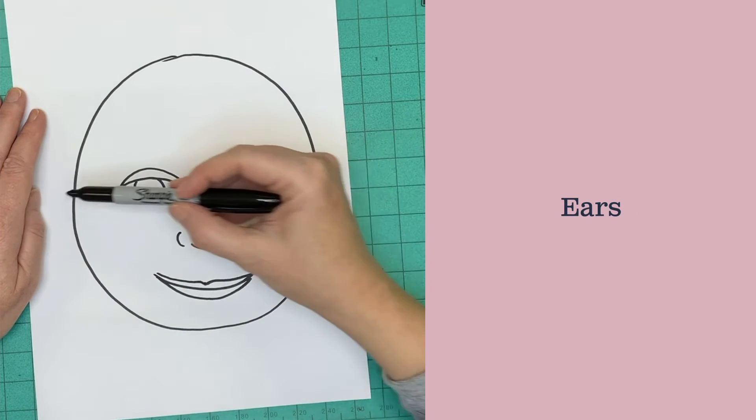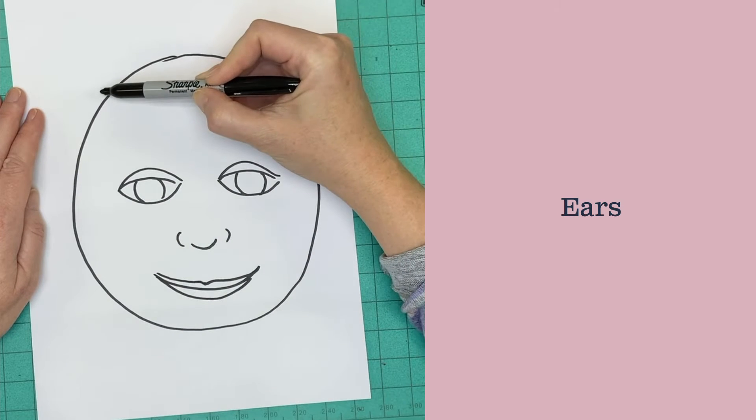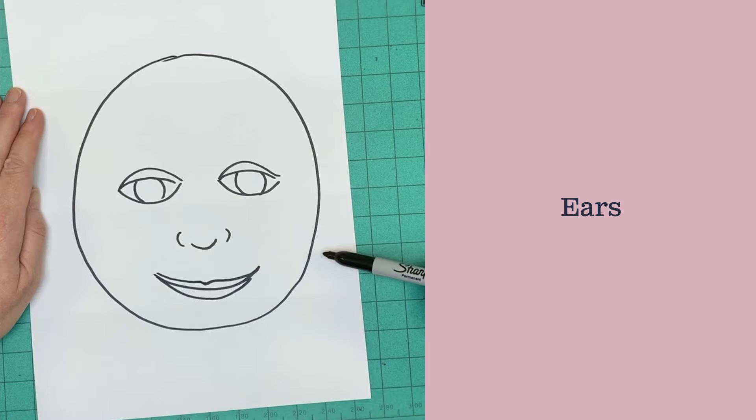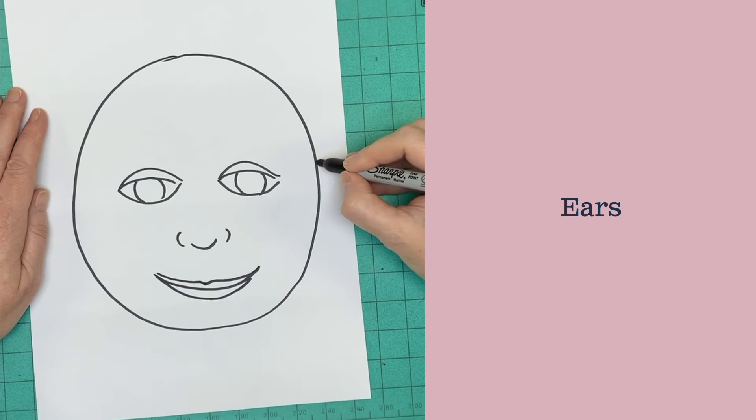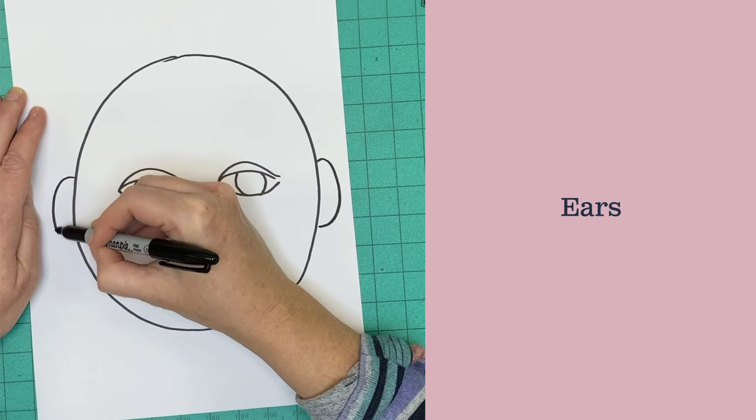Think about your ears the same way you thought about your eyes. We don't want to put the ears at the top of your head or at the bottom of your cheeks, so you want your ears to be in a curved line about the same place where your eyes are.